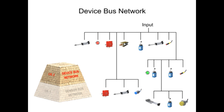The next increasingly complex level of industrial fieldbus networking is the devicebus network. The devicebus network is similar in function to the sensorbus network, but works on a larger scale, connecting many sensors and actuators together. The devicebus network also connects equipment to variable speed drives and motor control centers that allow for control of individual elements in the network.